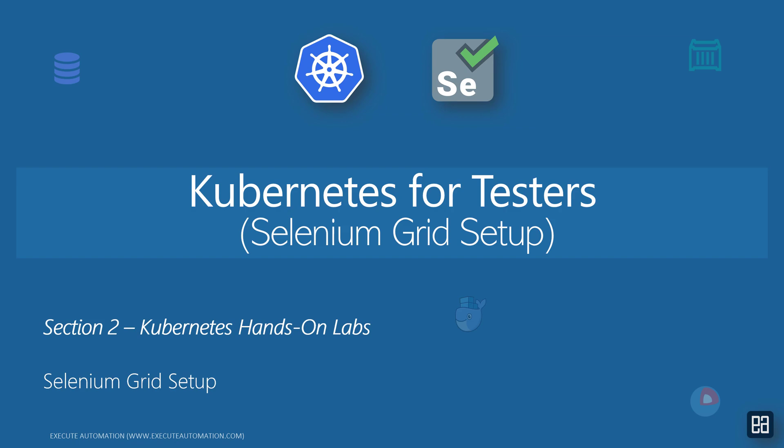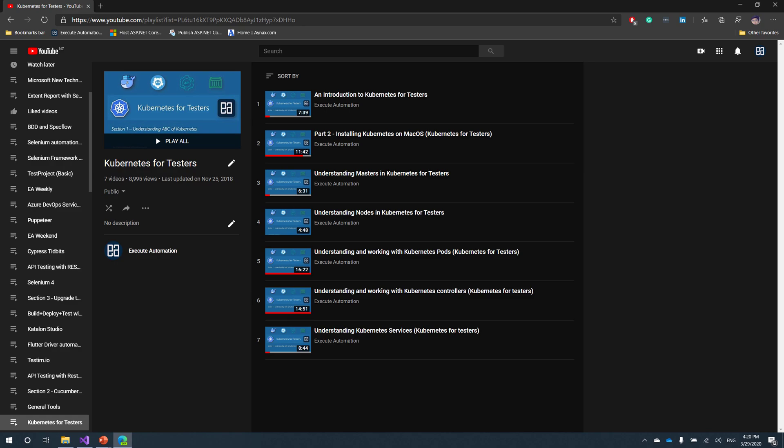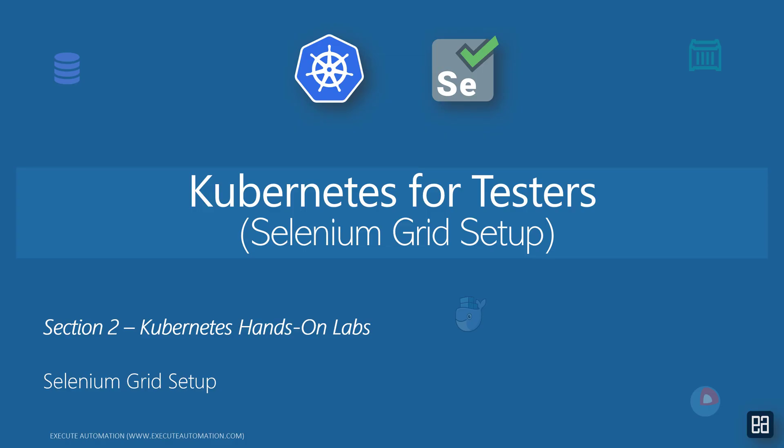Starting this section we are going to talk about how we can do a Selenium Grid setup. If you are new to this course, Kubernetes for Testers, you can find the complete discussion on our YouTube channel at Azure Automation, where we have already discussed an introduction to Kubernetes, installing Kubernetes on Mac, understanding masters, nodes, pods, replication controllers, and services. Starting section 2, we are going to talk more like a hands-on laboratory.